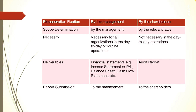Next is deliverables. Accounting prepares financial statements such as the income statement or profit and loss account, balance sheet, cash flow statement, and fund flow statement. Auditing, on the other hand, provides an audit report. This audit report is submitted to the shareholders, whereas in accounting, the report is submitted to the management.